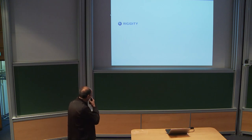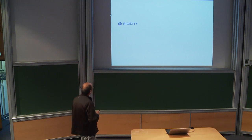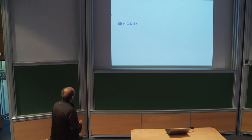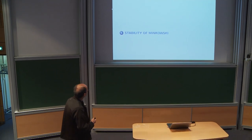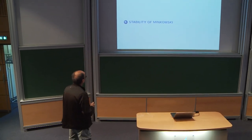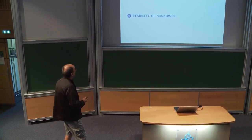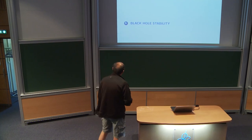Rigidity is the statement that the only stationary solutions of the Einstein equations in vacuum are the Kerr family. Stability is what we are talking about now, which is if you make small perturbations of Kerr, you stay close to Kerr. As a particular case, which is now understood, I talked about the stability of Minkowski space and the ideas behind it. Today I'll talk about the black hole stability.